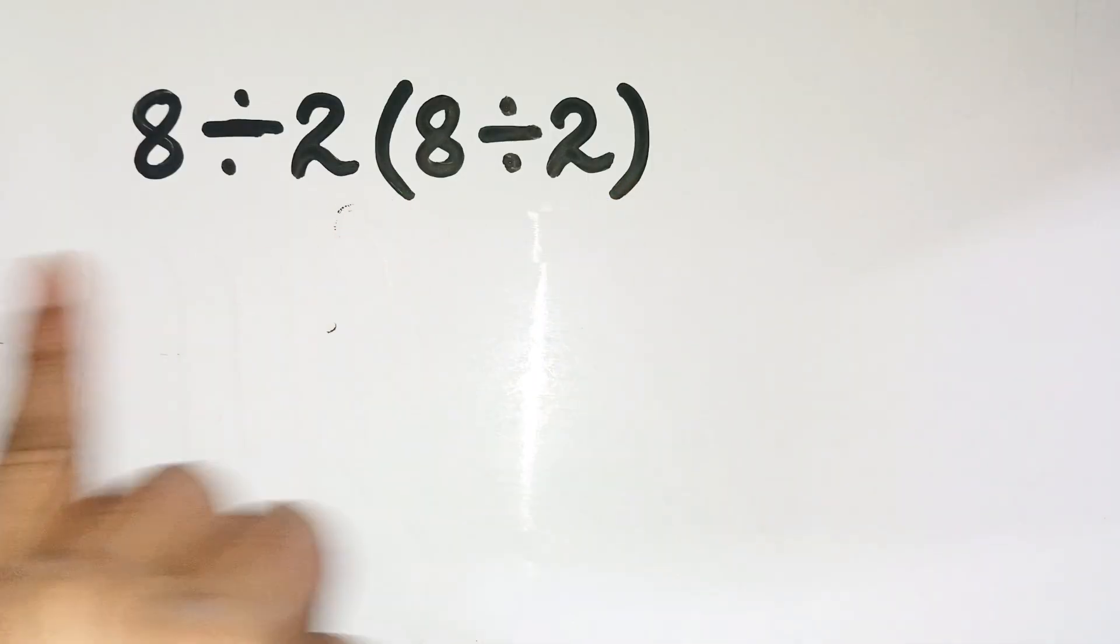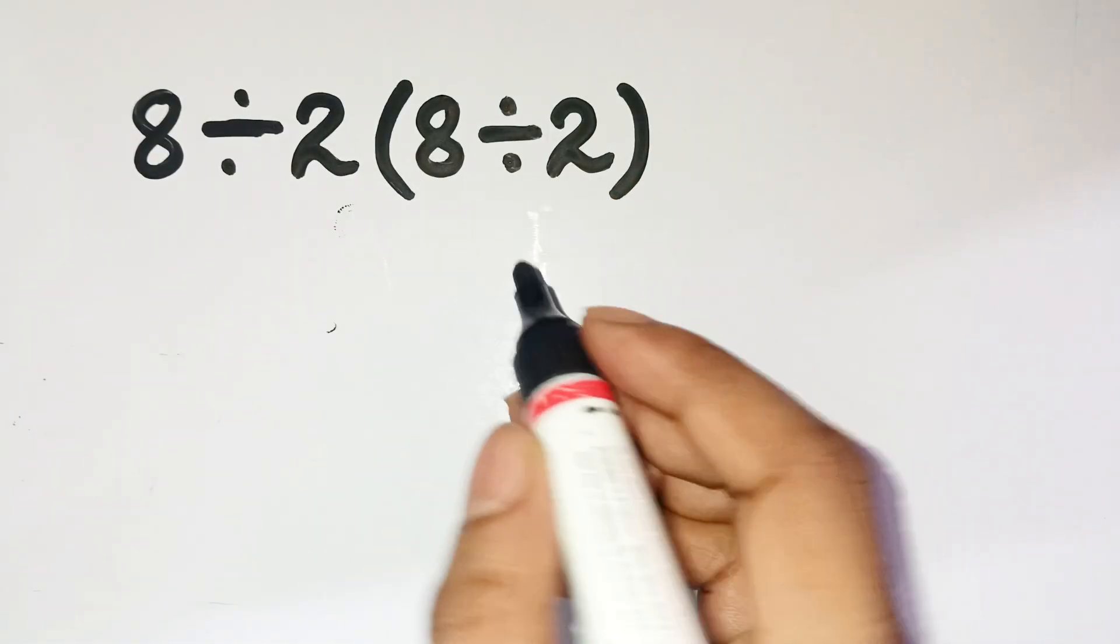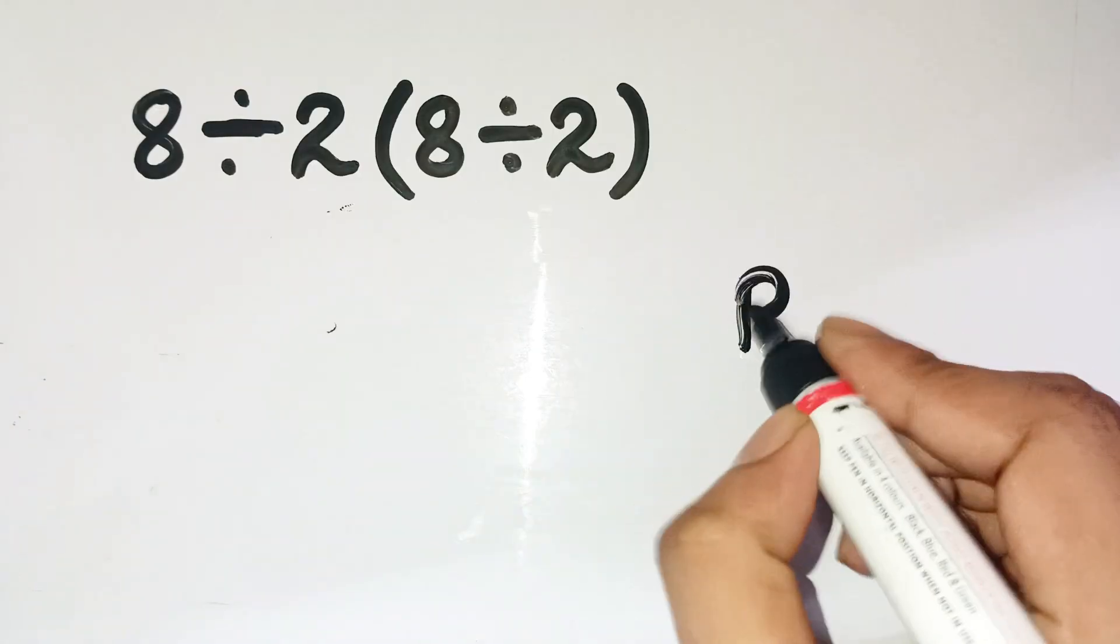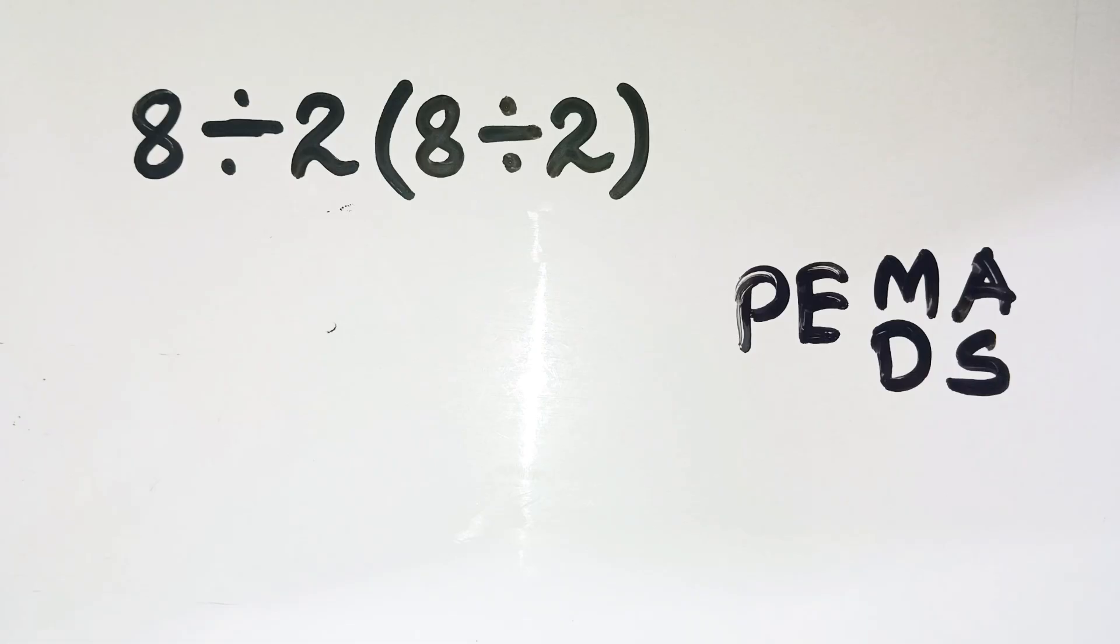This problem, 8 divided by 2 parentheses 8 divided by 2, is one of those deceptively simple expressions that reveal how tricky PEMDAS can get if you rush through it. Let's slow it down together.